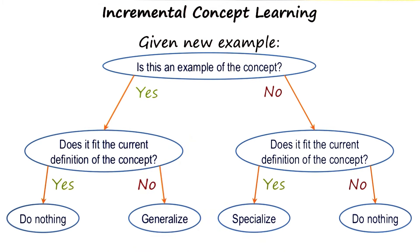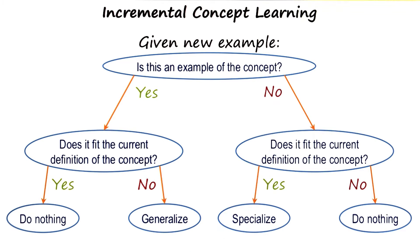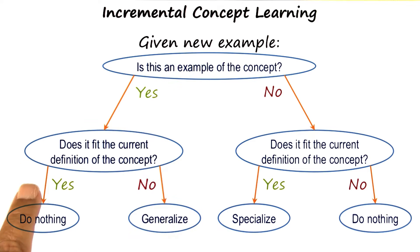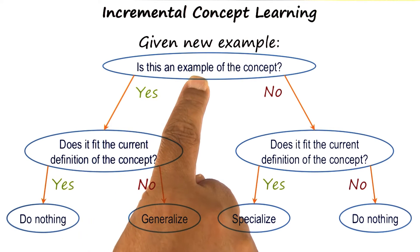We're given an example, and we're also told whether it's a positive example or a negative example. If this is a positive example, then the algorithm comes to the left branch of this particular tree. And it asks, does the current definition of the concept cover this positive example? We want to cover positive examples.